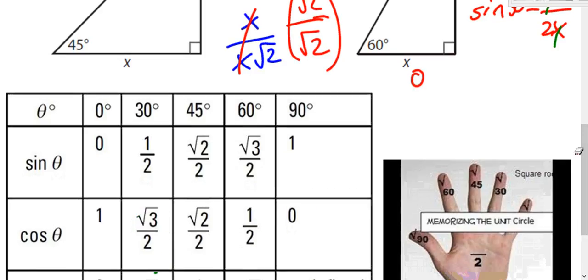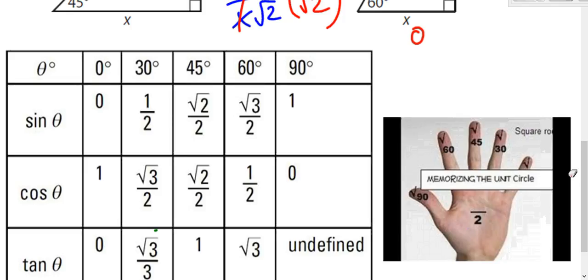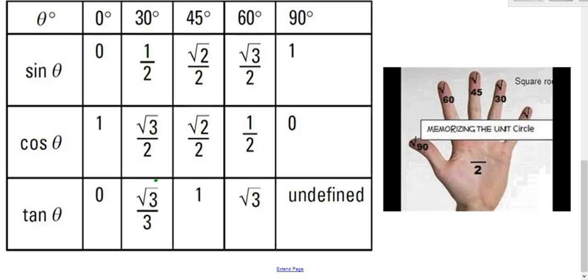You can remember all of this using your left hand — often called the left-hand trick. It's sometimes described as a way to memorize the unit circle, but it's really for memorizing sine of 30, sine of 45, and sine of 60. There are many videos available on how to do it. The gist is: your ring finger is the 30-degree angle, your middle finger is the 45-degree angle, and your pointer finger is the 60-degree angle. Fold down whichever finger matches the angle you're working with.